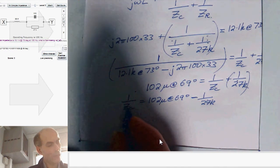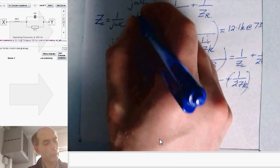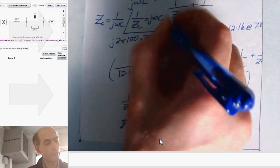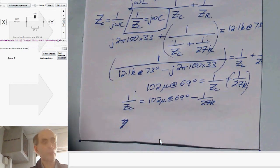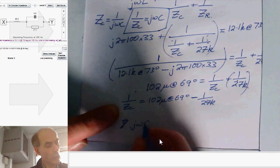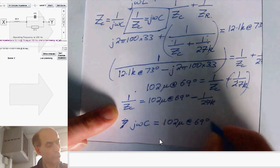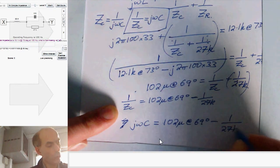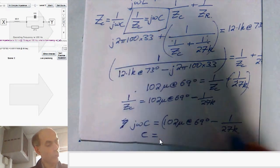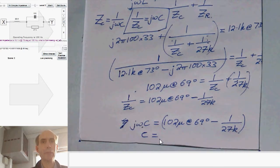Because I know that ZC is 1 over J omega C. And therefore 1 over ZC must be just J omega C. So I could write down here this. My 1 over ZC is J omega C is equal to 102 micro at 69 degrees minus 1 over 27k. And therefore my capacitance is just this lot divided by J omega. Let's give it a go.